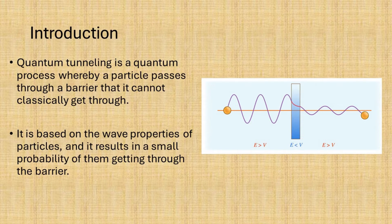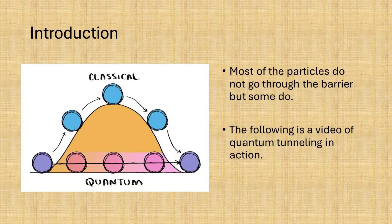Quantum tunneling is a quantum process whereby a particle passes through a barrier that it cannot classically get through. It is based on the wave properties of particles, and it results in a small probability of them getting through the barrier. Most of the particles do not go through the barrier, but some do. The following is a video of quantum tunneling in action.